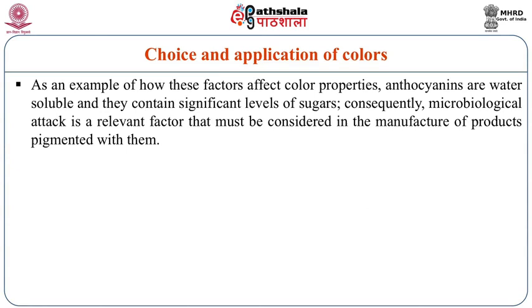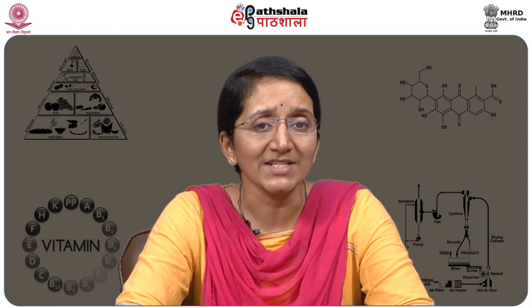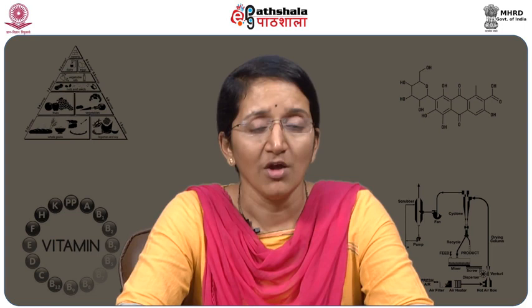As an example of how these factors affect color properties, anthocyanins are water-soluble pigments and they contain significant levels of sugars. Consequently, microbiological effects are a relevant factor that must be considered in the manufacturing of products when using anthocyanin as a colorant. Today, we have learnt about what are pigments, the difference between a pigment and a color, the history of pigments, the types of colorants and pigments, the functionalities of different kinds of pigments and metalloproteins, the classification of pigments, and finally the application of pigments in various foods. For further information, you can refer to a food chemistry textbook or advanced food science textbook or any other relevant material for in-depth understanding of pigments. Thank you.